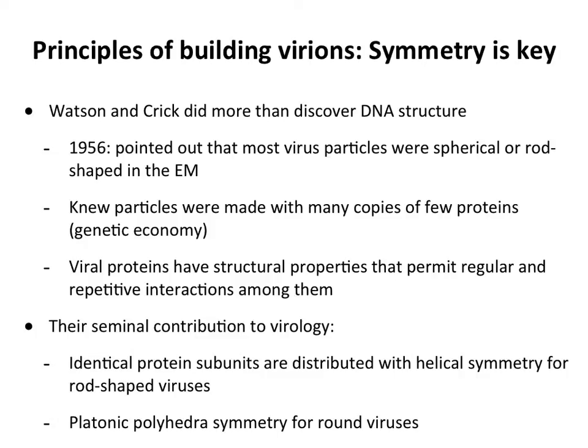They wrote a paper in which they said that most of the viruses that we look at under the EM — and all the data we had so far was from EM — they're either spherical or they're rod-shaped. So here we have a spherical poliovirus particle down there on the table in gray, and a rod-shaped particle would be like tobacco mosaic virus. Of all the EMs of viruses that had been done, they pretty much fell into those two categories.